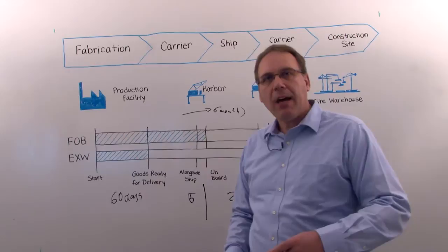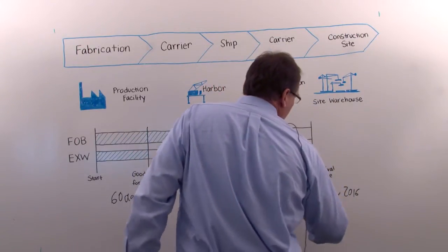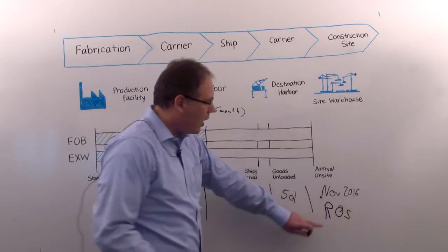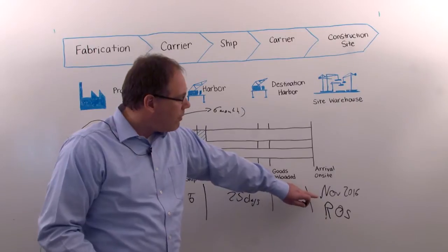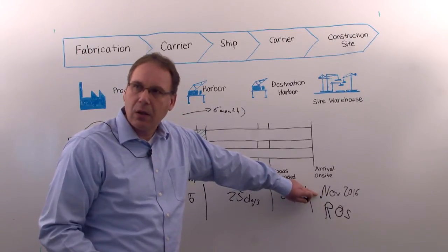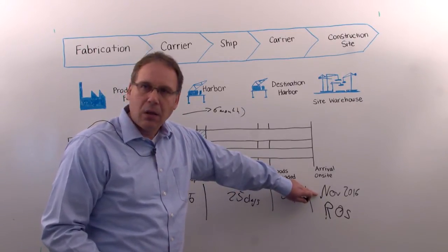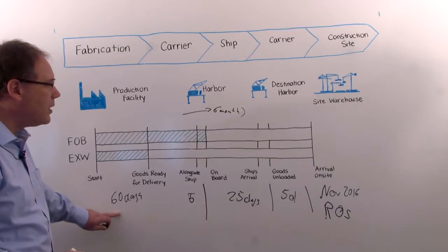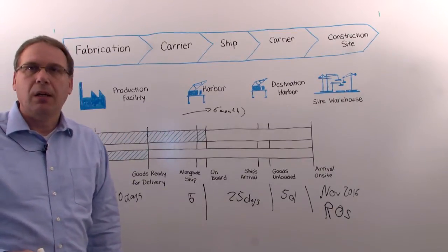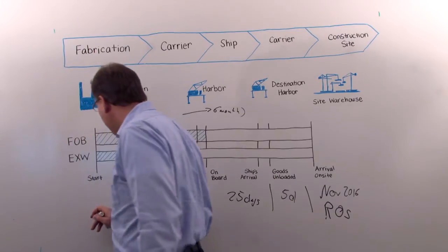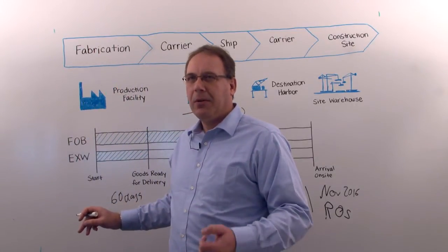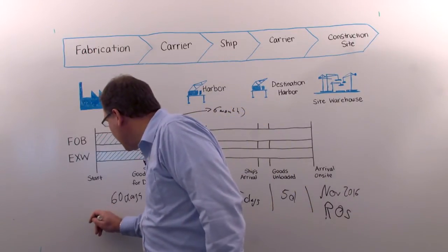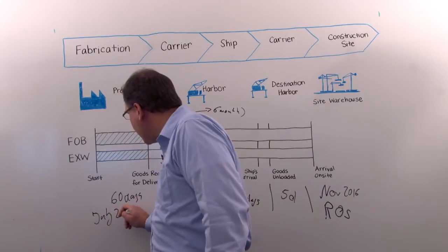So if I have now and this date is called required on site date, ROS, that's the language. So if I need this in November 2016, you back calculate. I need this now 30 days, 35 days, 90 days, three months earlier. So latest I need to start my production, November minus three months, that's October, September, August. I need to start, let's say I put some buffer on it, in July 2016.